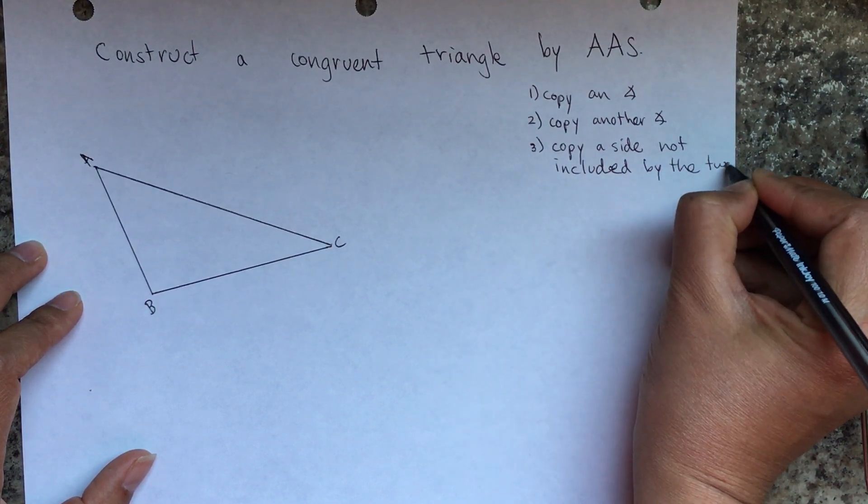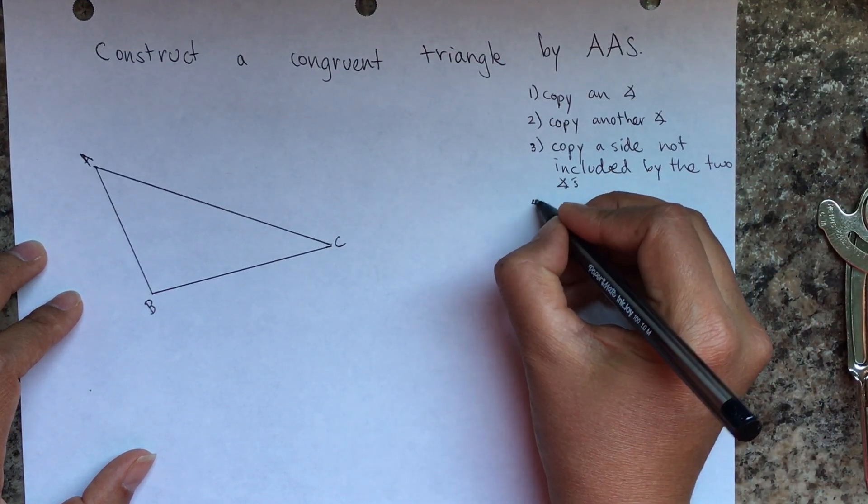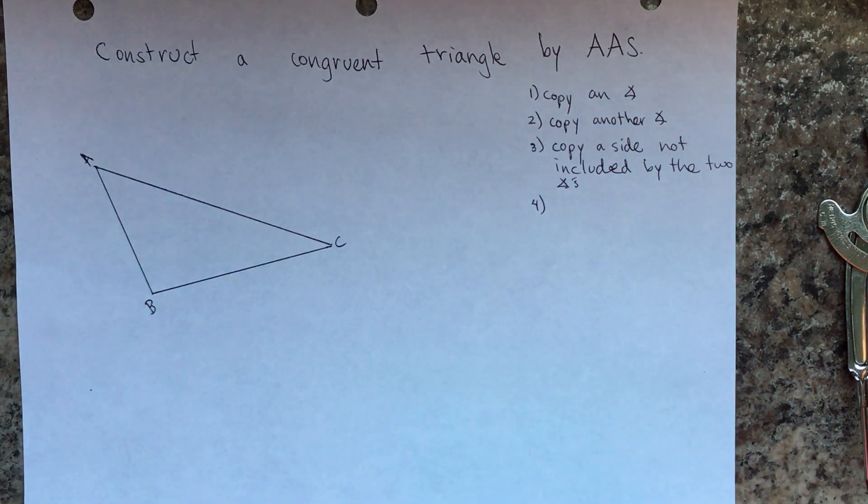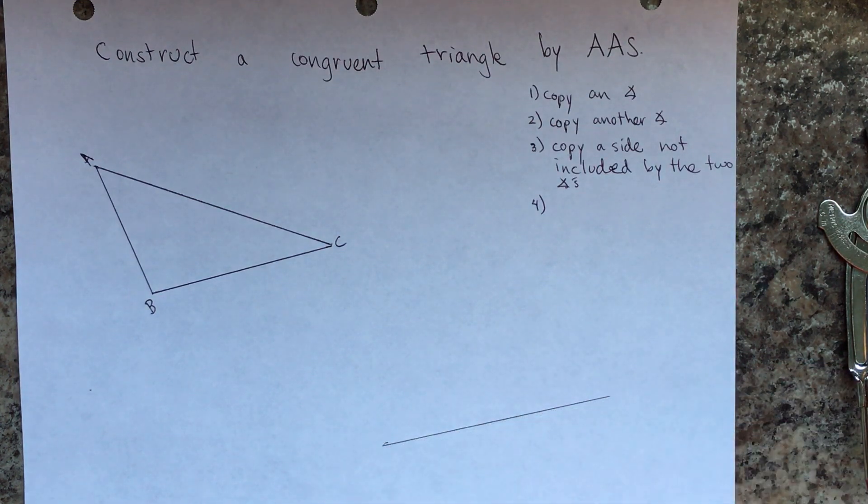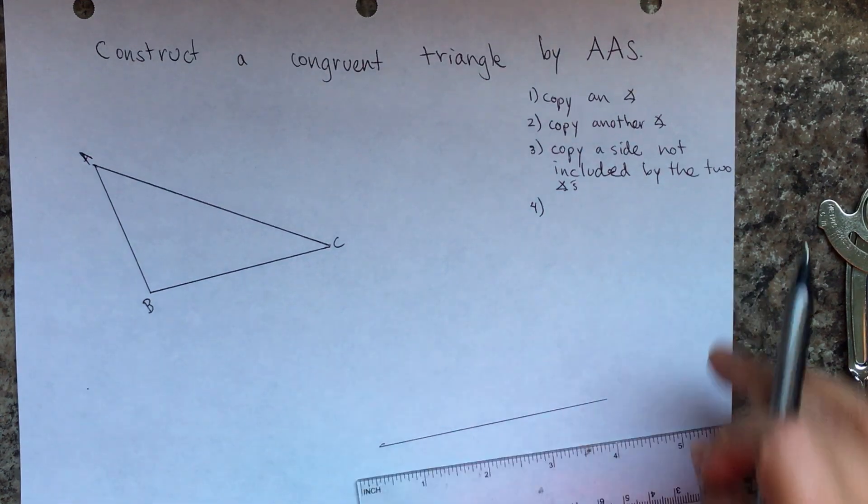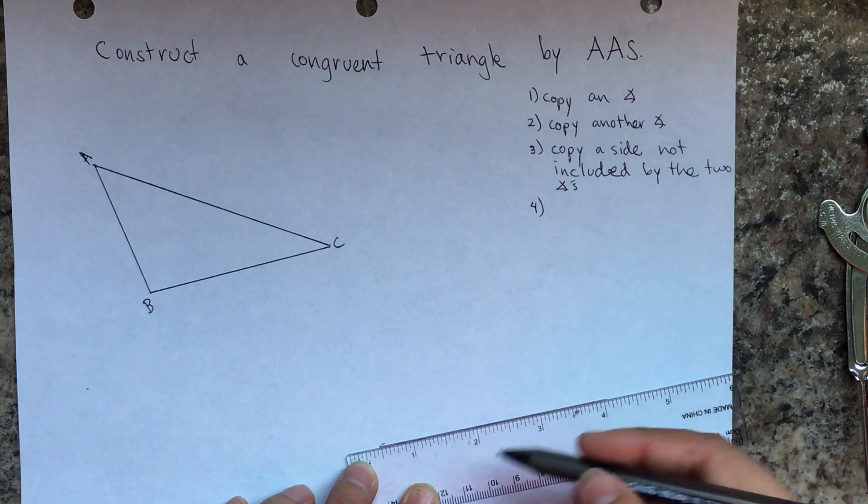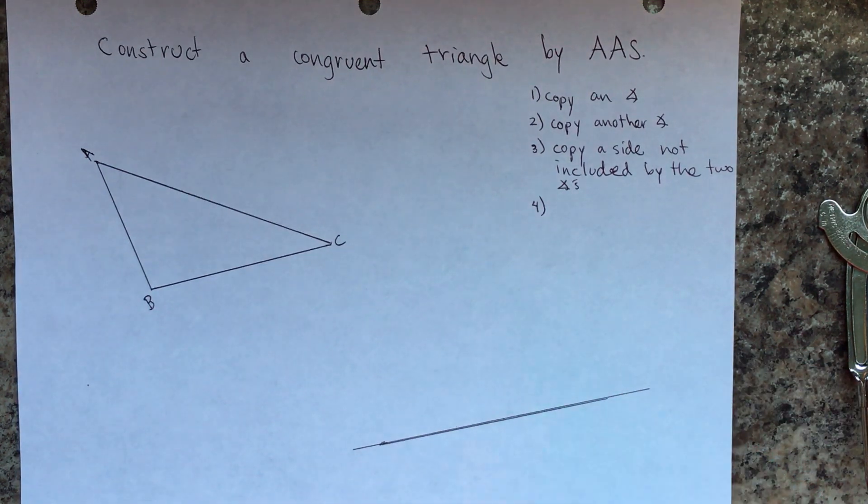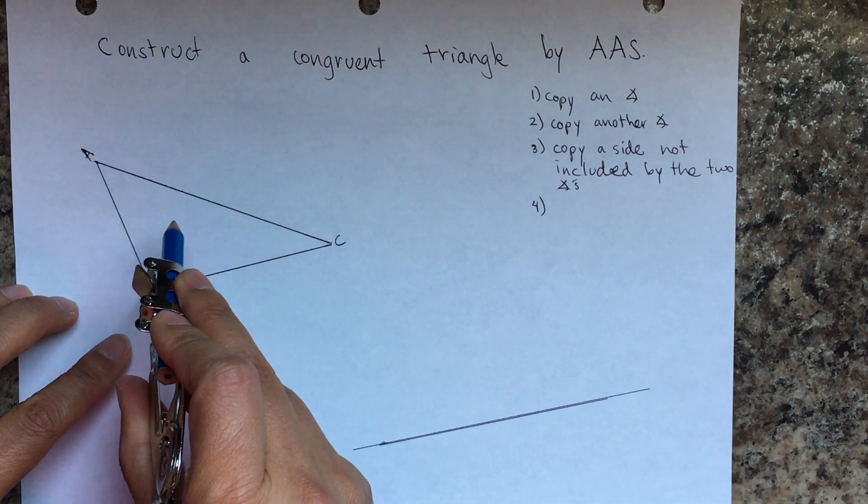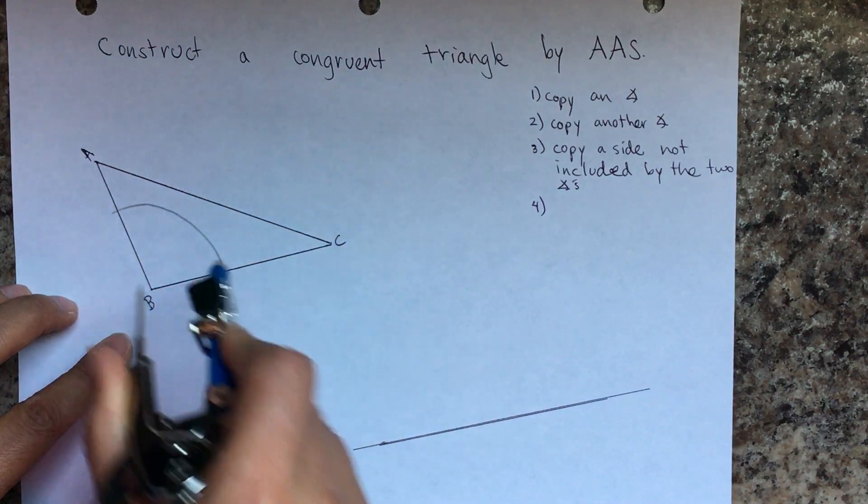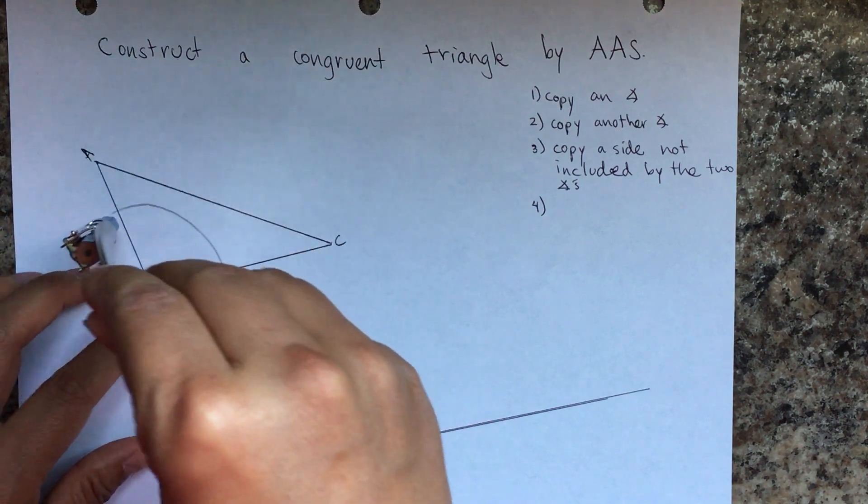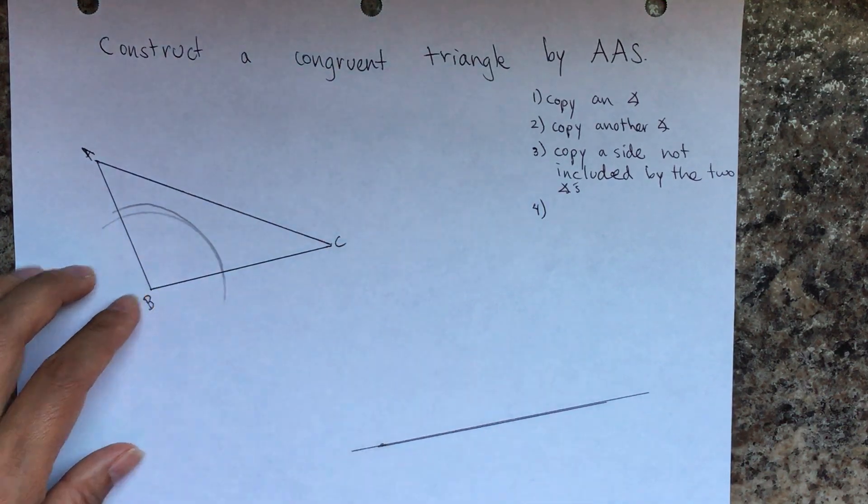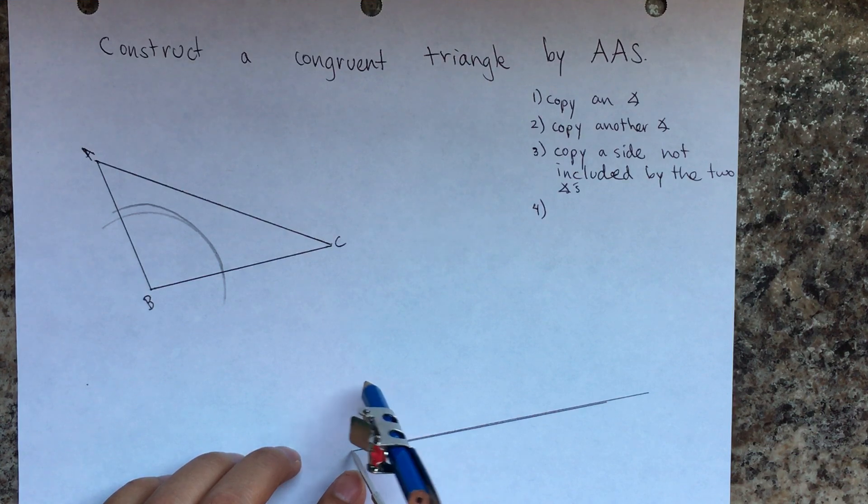To copy an angle, first you have to draw a line. I'm going to extend it a little bit more. I'll copy angle B. Okay, I'll just close as you can see in there. There you go. I'm going to copy that in here, I'm going to transfer it onto our new triangle.